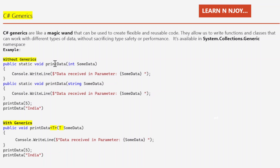These are overloaded methods — same method name with different parameter data types. When calling PrintData(5), the compiler invokes the int version because 5 is an integer, printing 'data received in parameter: 5'. When calling PrintData('India'), the string version is invoked, printing 'data received in parameter: India'.